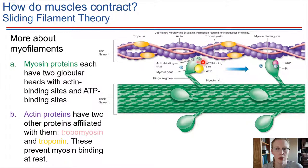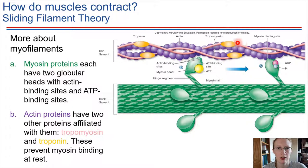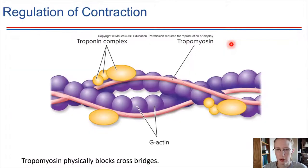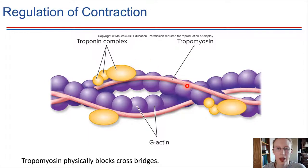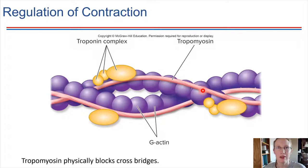Focusing on what's going on with actin: these actin proteins have tropomyosin — that sort of pink band — and also troponin bound to them. This is the ordinary structure for actin at rest. The troponins are attached to tropomyosin, and tropomyosin is blocking the binding site for the thick filaments. So all binding sites are blocked and it's not possible for a bridge to be formed between the thick and thin filaments.